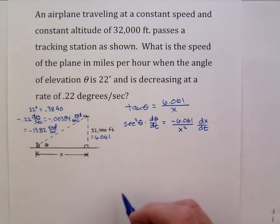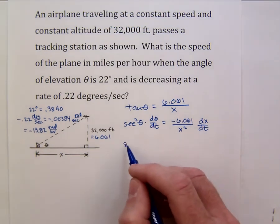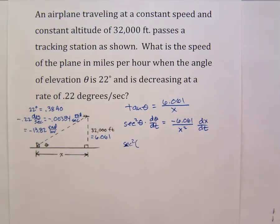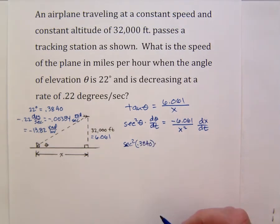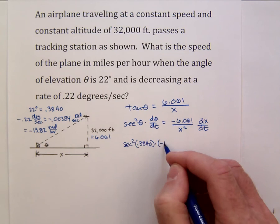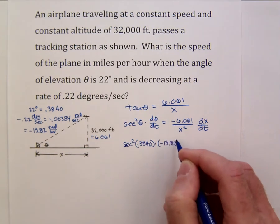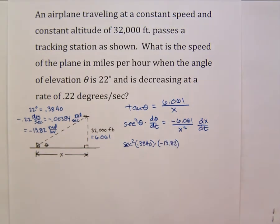And now it's appropriate to begin plugging in. So we have the secant squared of theta which at this instant is 0.3840 radians times d theta dt which is negative 13.82 radians per hour.